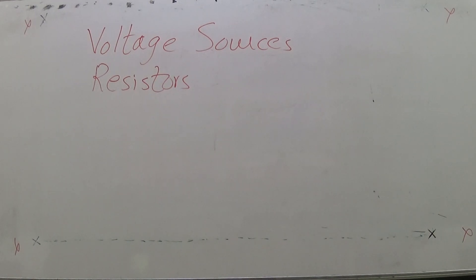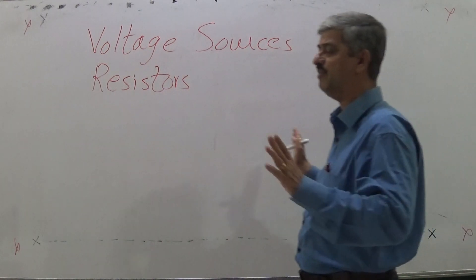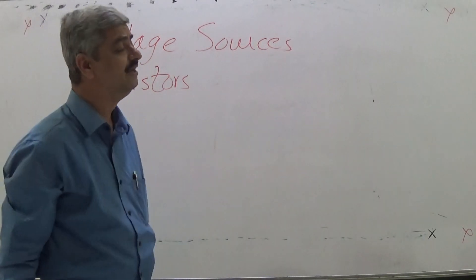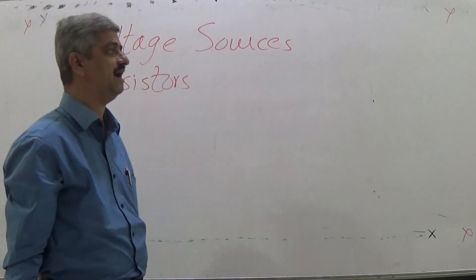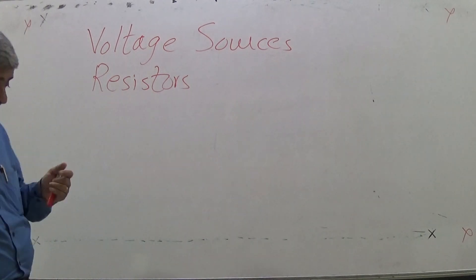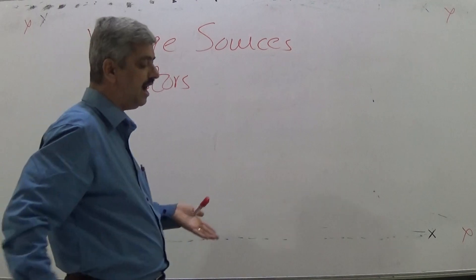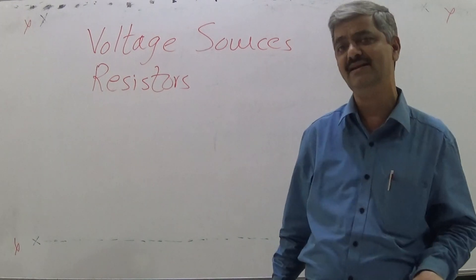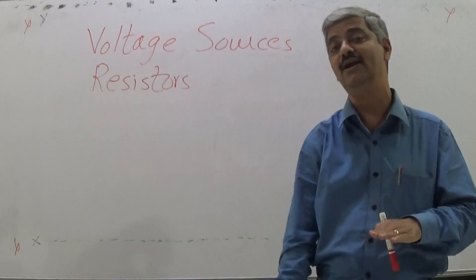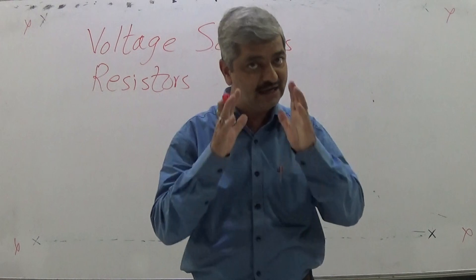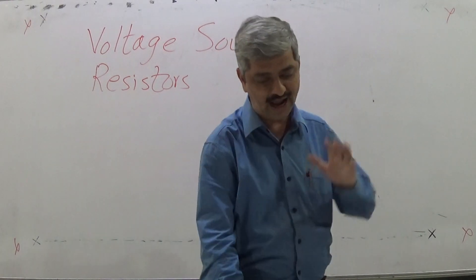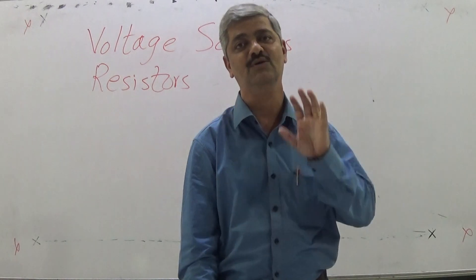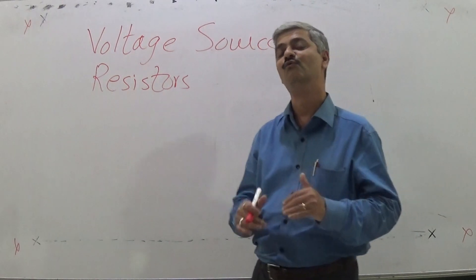Using voltage sources and resistors we will construct an enormous number of examples and try to solve these problems. As we increase complexity, you will find that conventional methods of solving are somewhat inadequate — they make calculations much more complicated. Can we have some simpler methods? Remember, all these things forming part of classical circuit theory were developed centuries ago, when computing devices available to us today were not available.